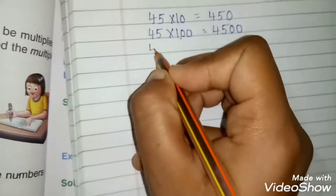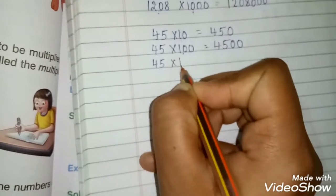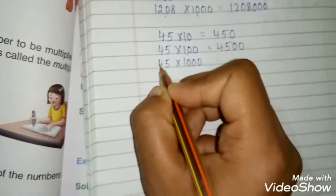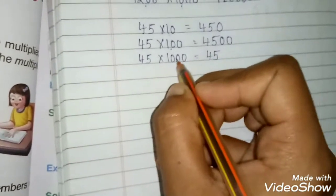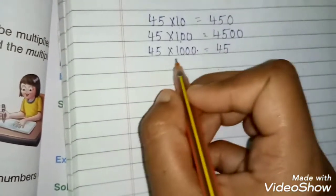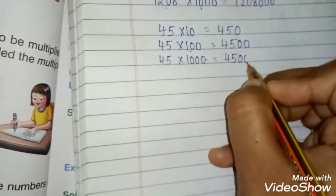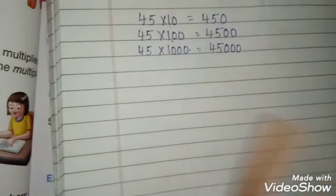Now for 1000, what you have to do. First you will write the digit as it is. Then the number. Oh sorry, then the zeros on the right of your number.